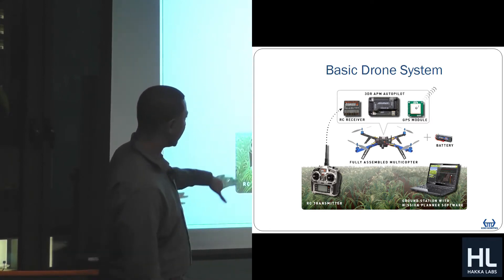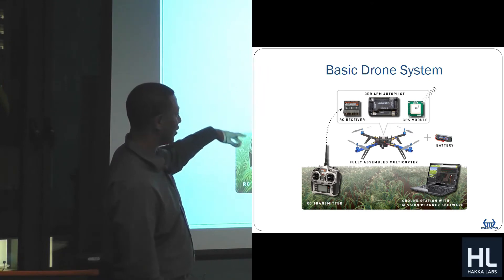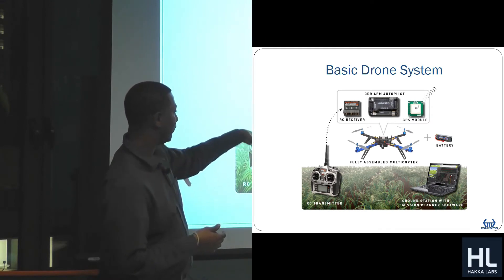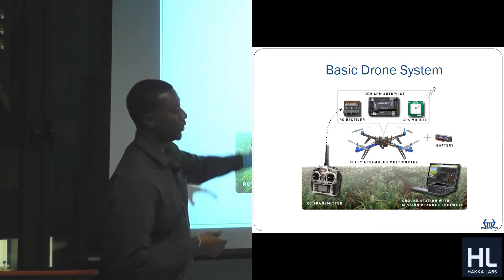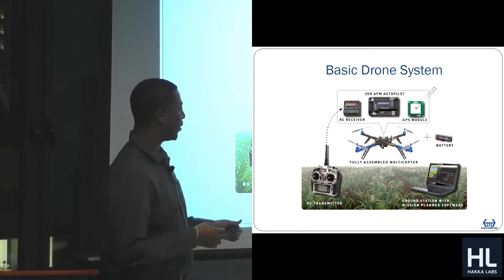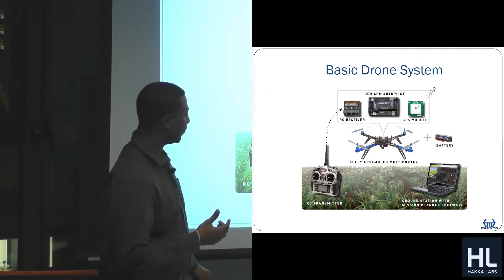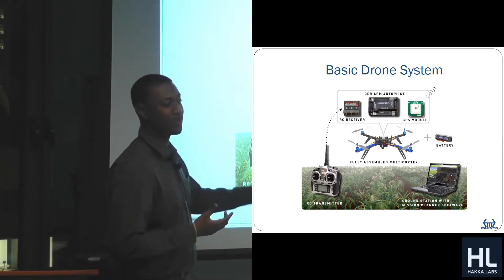Basic drone systems just got an RC transmitter, receiver, some sort of autopilot, which is a computer controlling the loop, GPS module, battery, and all this hardware stuff. My background is in aerospace and defense, so I know all this hardware stuff. But I've been forced to learn Python because I like all this drone stuff.